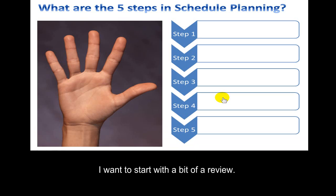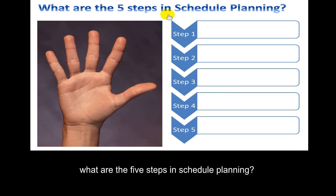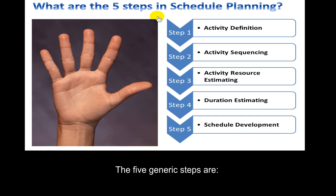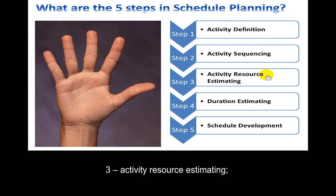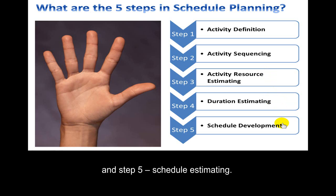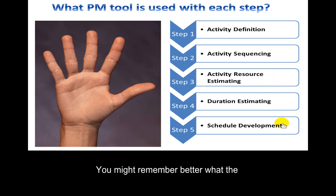I want to start with a bit of a review and answer this question: what are the five steps in schedule planning? The five generic steps are: Number 1, Activity Definition; 2, Activity Sequencing; 3, Activity Resource Estimating; Step 4, Duration Estimating; and Step 5, Schedule Estimating.